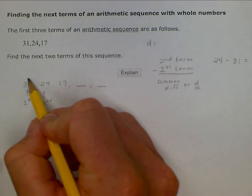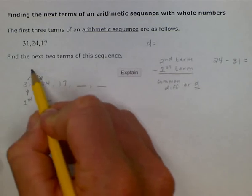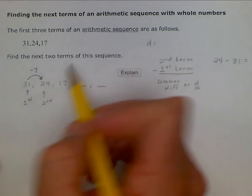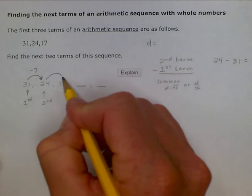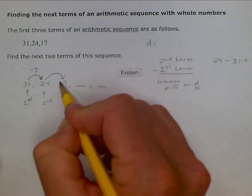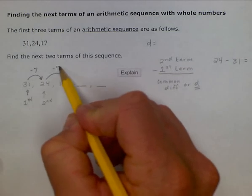So, the common difference, or d, from here to here, if you add a negative 7, or in other words, subtract 7 from 31, you're going to get 24. And on down the line, if you subtract 7, or add a negative 7 to 24, you're going to get 17.